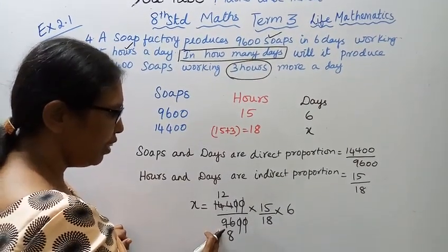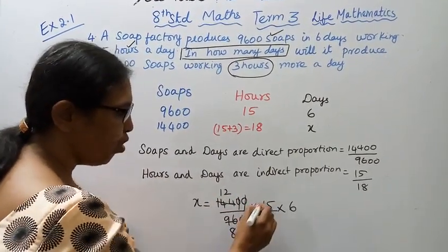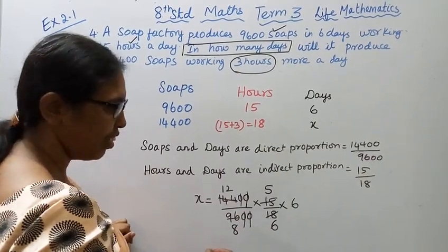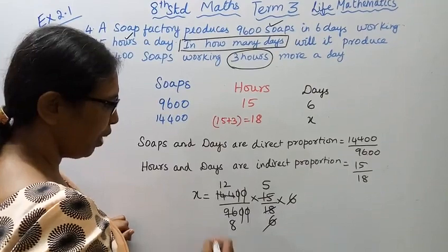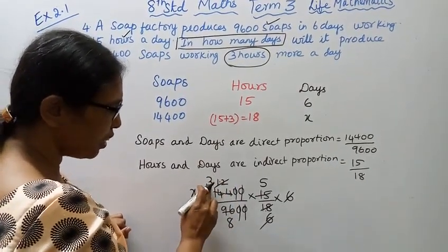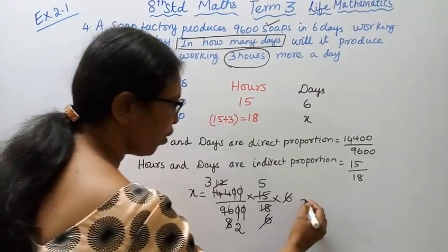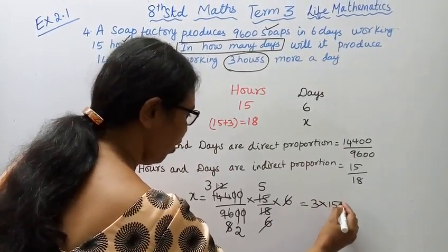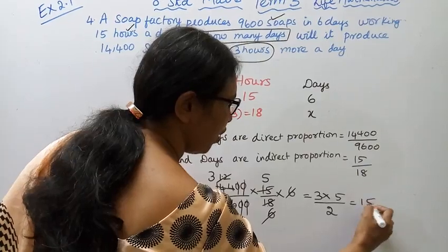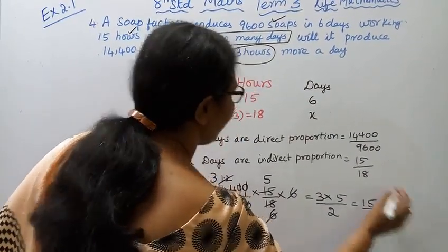After canceling at various levels, the 6 and 18 cancel, 15 reduces, and we simplify to 3 into 5 by 2, which equals 15 by 2. So the answer is 15 by 2 days, or seven and a half days.